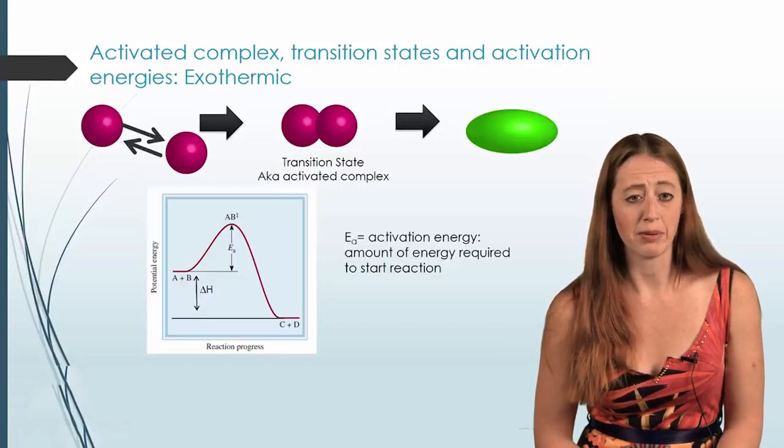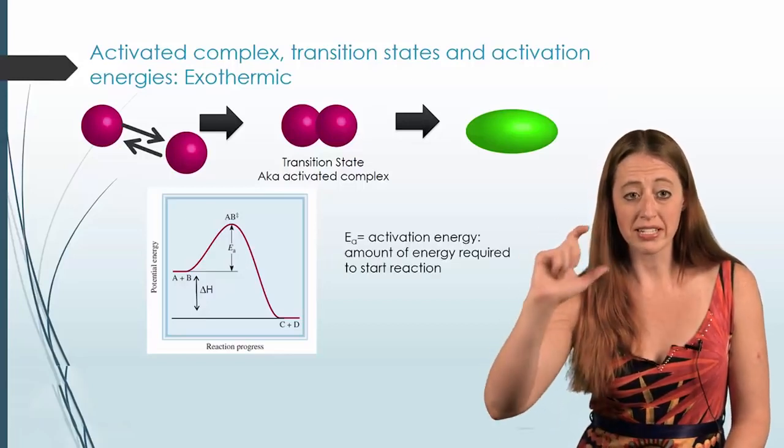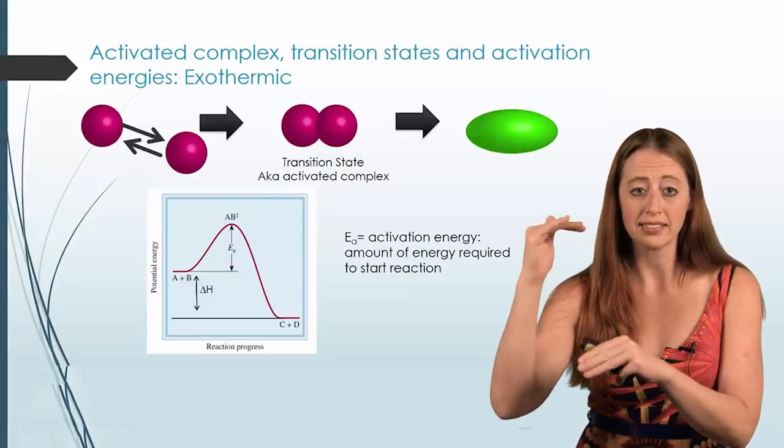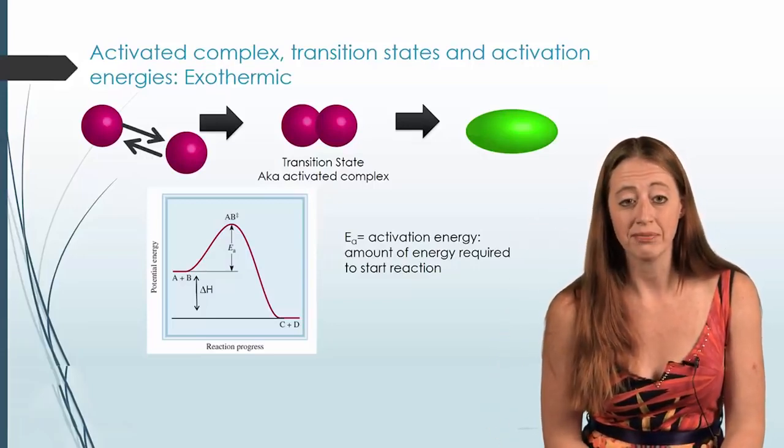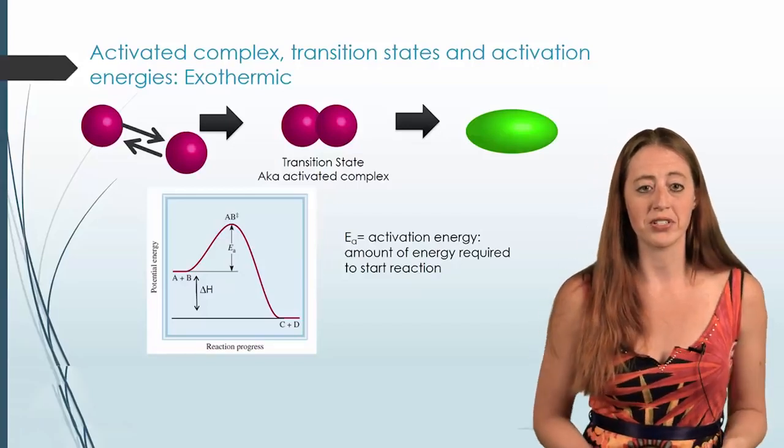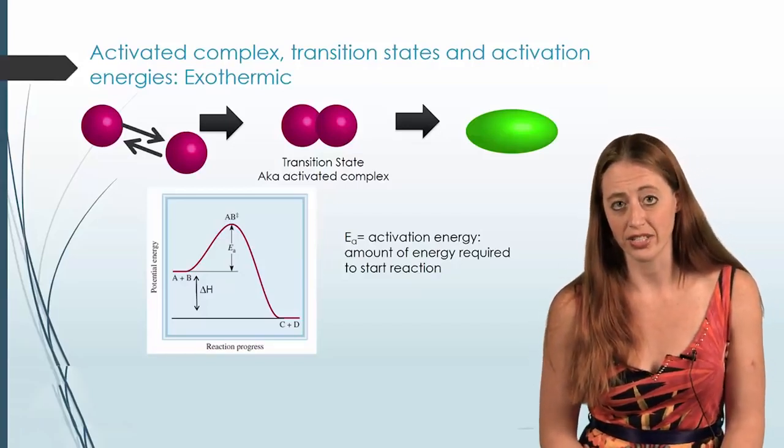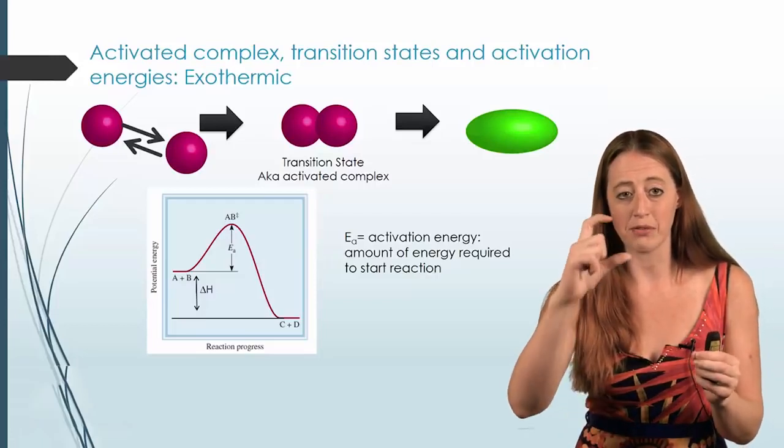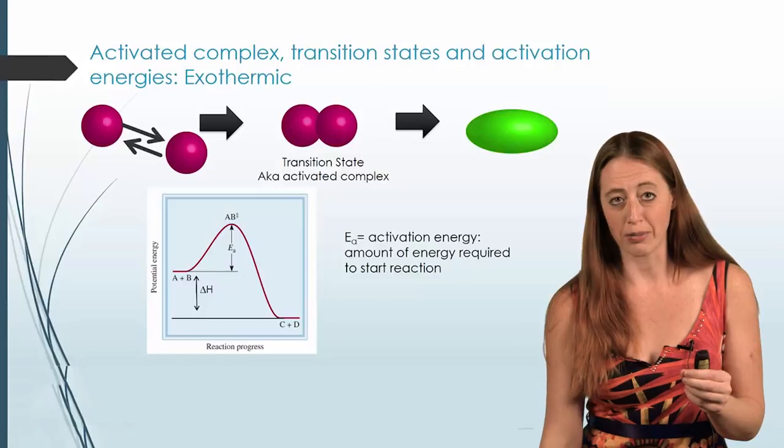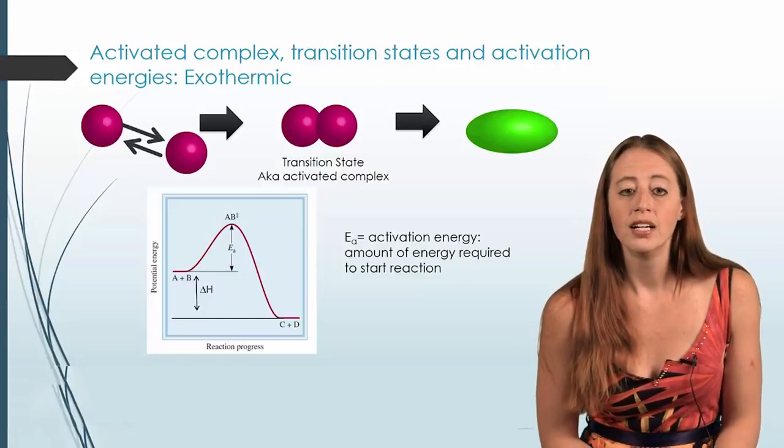So now there's some values here that we want to pay attention to. First off, that difference between the reactants and the transition state. As you can see on the graph, we have that labeled EA. That's your activation energy or the amount of energy that is required to start a reaction. Because that's the energy that you have to have to get those reactants to form that transition state to fall back down.